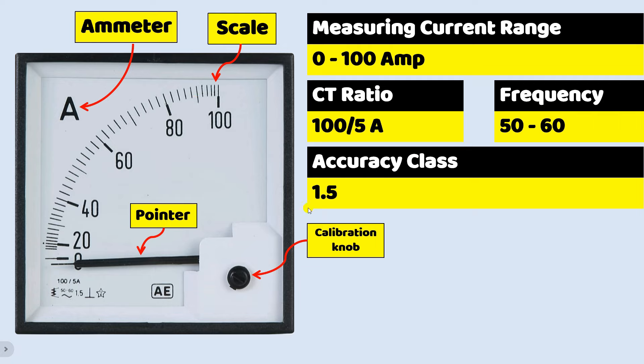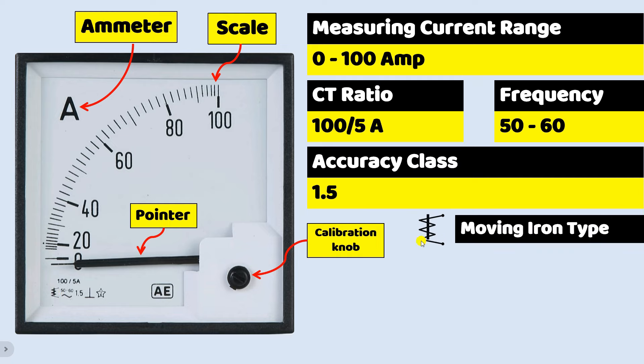Apart from this, there are some symbols here. Let's understand the meaning of these symbols. First of all, you can see this symbol. We call this symbol as moving iron symbol. This symbol tells us the principle on which the ammeter works. At present, ammeter is of moving iron type. It means that it works on the principle of moving iron. Apart from this, you can see this symbol here. It means power supply. It means that this ammeter will work on AC power supply.